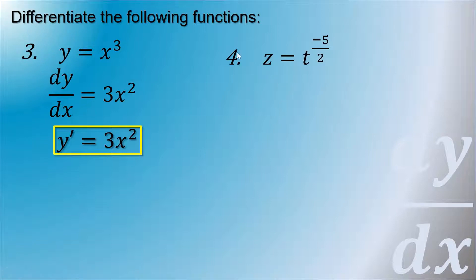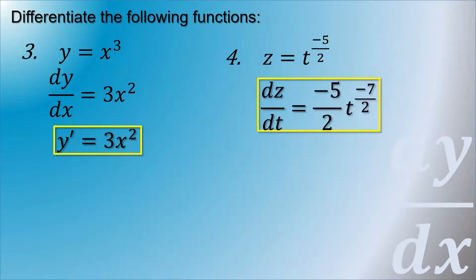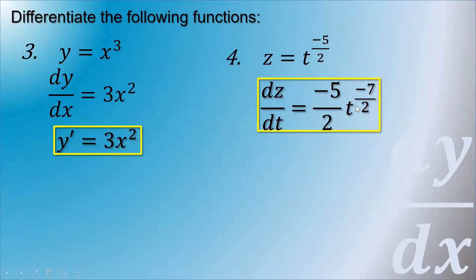Fourth example: z is equal to t raised to the exponent 5 over 2, or 5 halves. Finding the derivative of z with respect to t, that is dz/dt — bringing down the exponent 5/2, times t raised to 5/2 minus 1. Subtracting 1 from 5/2 gives an exponent of 3/2, so dz/dt equals (5/2)t raised to 3/2.